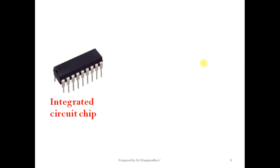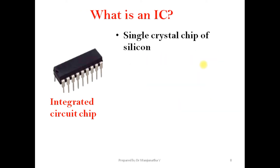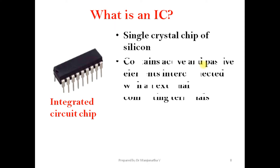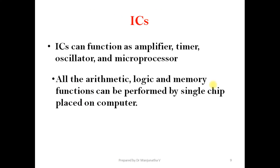What are integrated chips? An IC is a single crystal chip of silicon in which active and passive elements are incorporated with external connecting terminals. It can also be defined simply as a packaged electronic circuit. These ICs can function as an amplifier, timer, oscillator, and microprocessor.